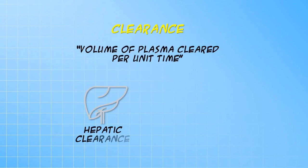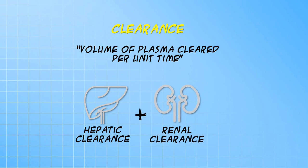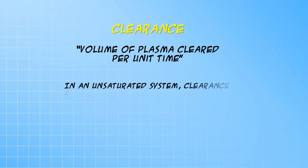The clearance of a drug is very simply the volume of plasma that can be totally cleared of the drug per unit time, and is the sum of what the liver and kidney can respectively do. Since clearance refers to the amount of plasma that can be cleared per unit time, what you've learned about the volume of distribution is important because it conceptualizes the entire body as being represented by plasma.